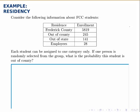Here we're given a breakdown of some students at FCC by their residency. Some live in Frederick County, some live out of county, some live out of state, and some are employees of the college. Furthermore, we're told that each student can only be assigned to one category, so there's no overlap — no one falls into any two categories.